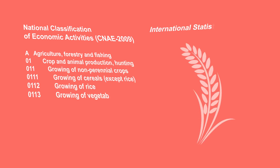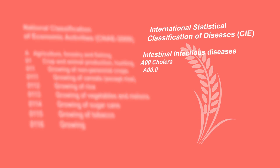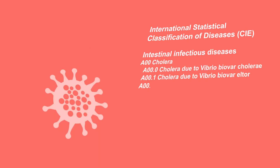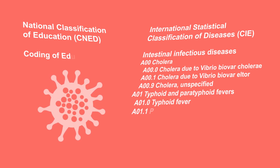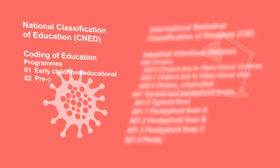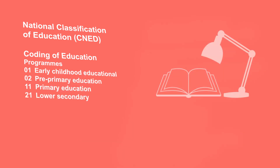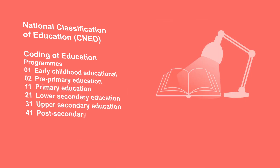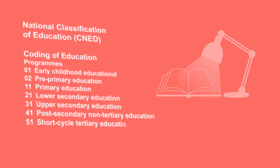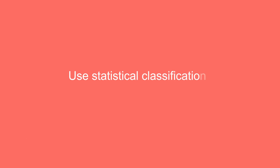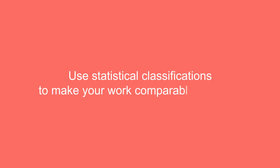Some examples of statistical classifications are the national classification of economic activities, the international classification of diseases, or the national classification of education.